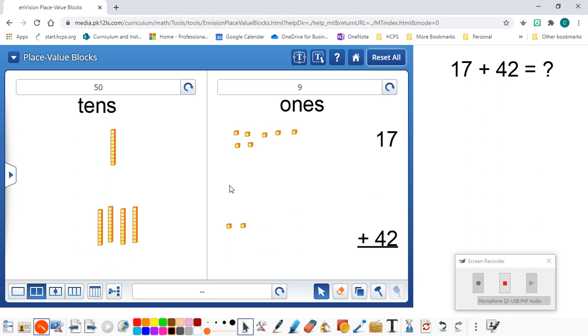Now, we're going to add our partial sum of tens of 50 to the partial sum of the ones, which is 9. So, 50 plus 9 is going to equal 59. And I can check my work down here. So, 17 plus 42 equals 59.